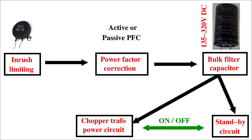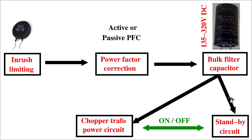We discussed the functionality of an NTC which limits the inrush current going into a bulk DC filter capacitor. After this large bulk mains filter capacitor we normally split the power into two different paths.